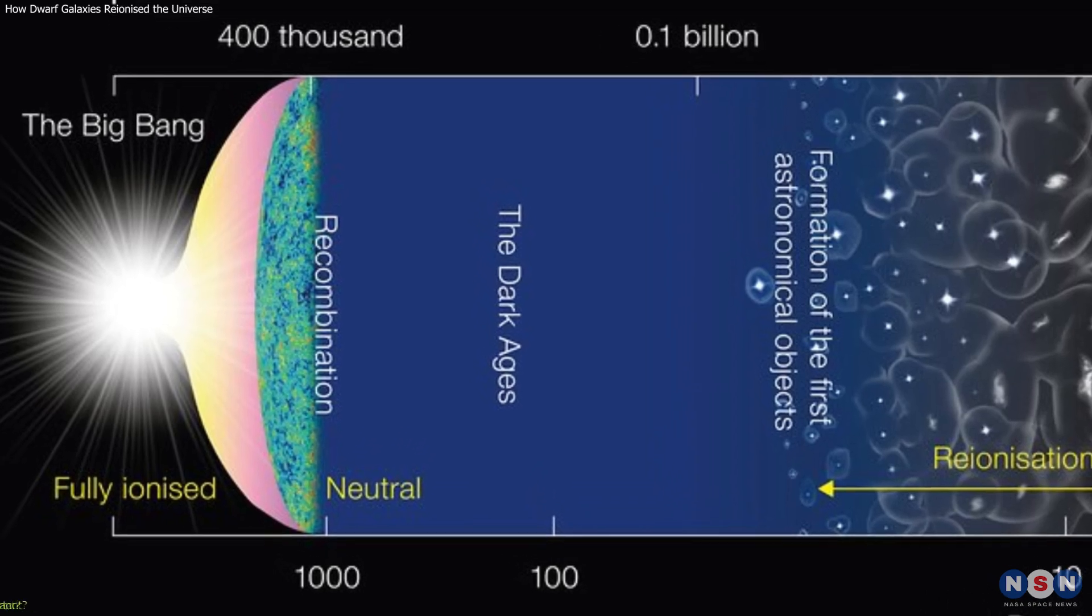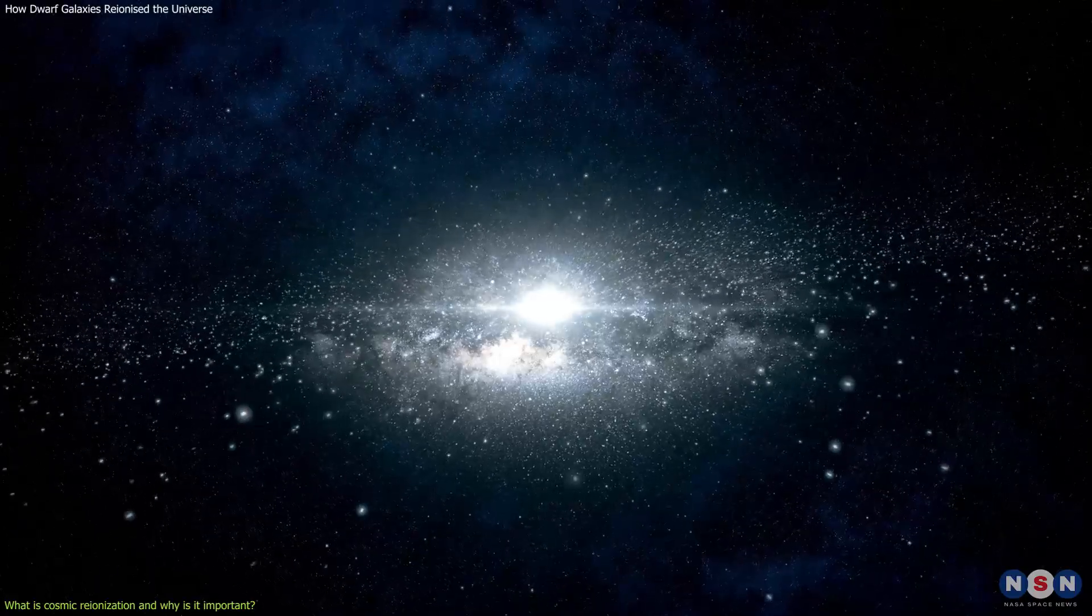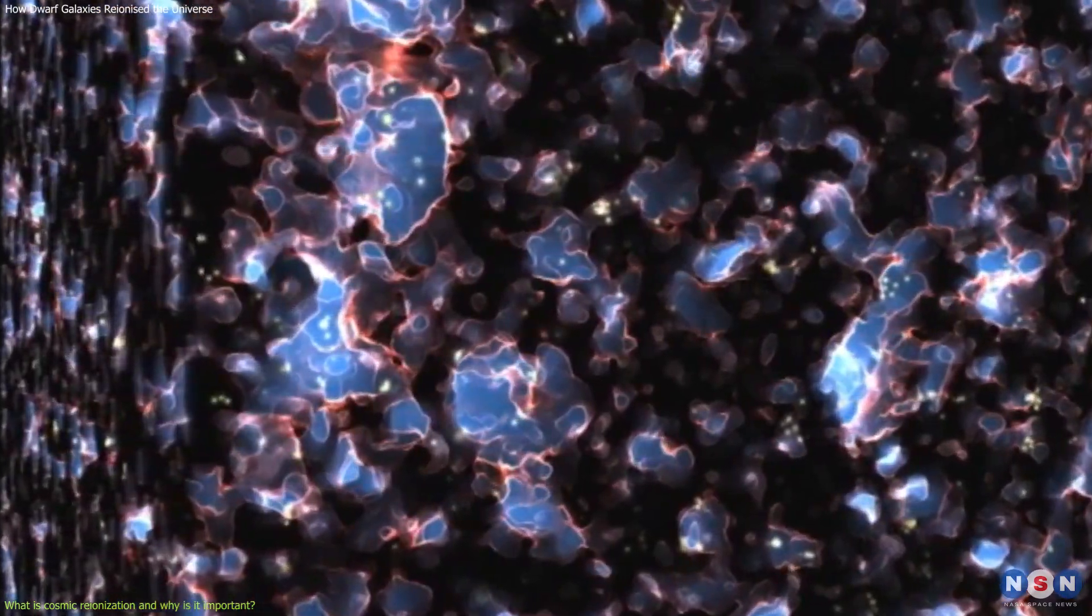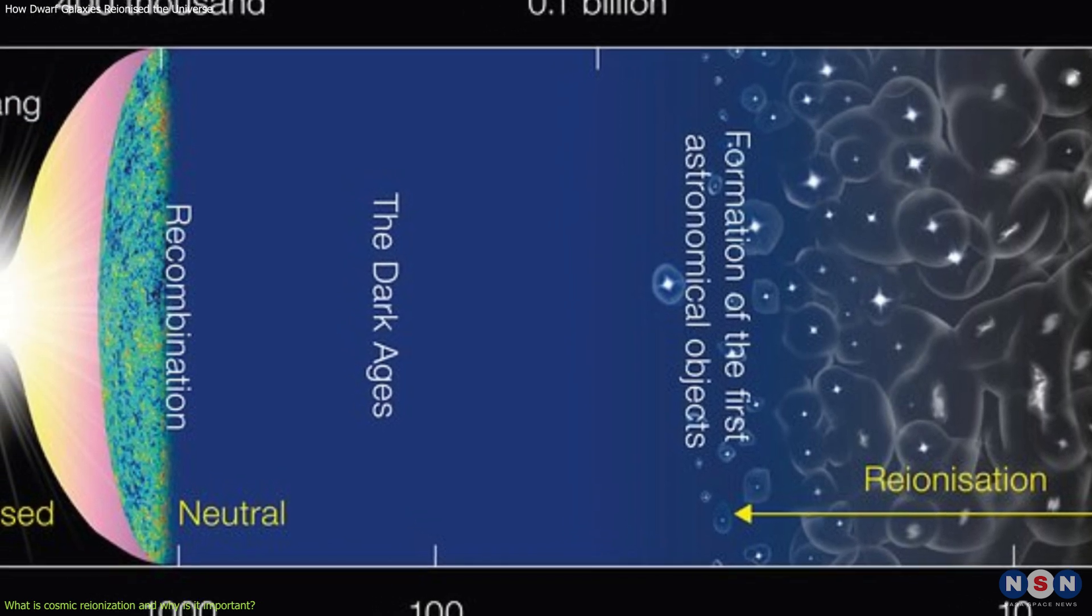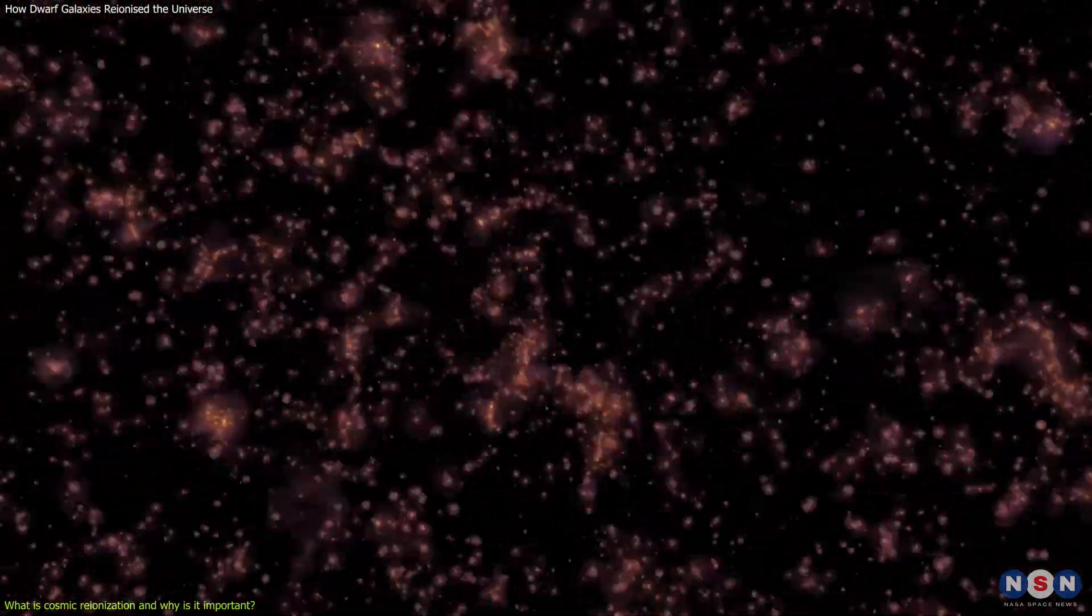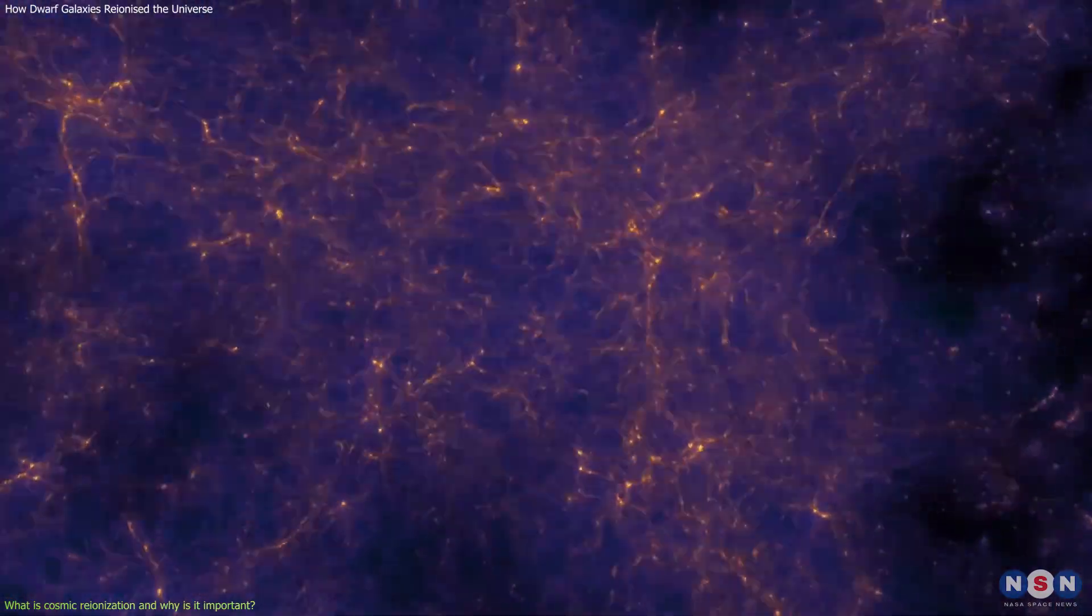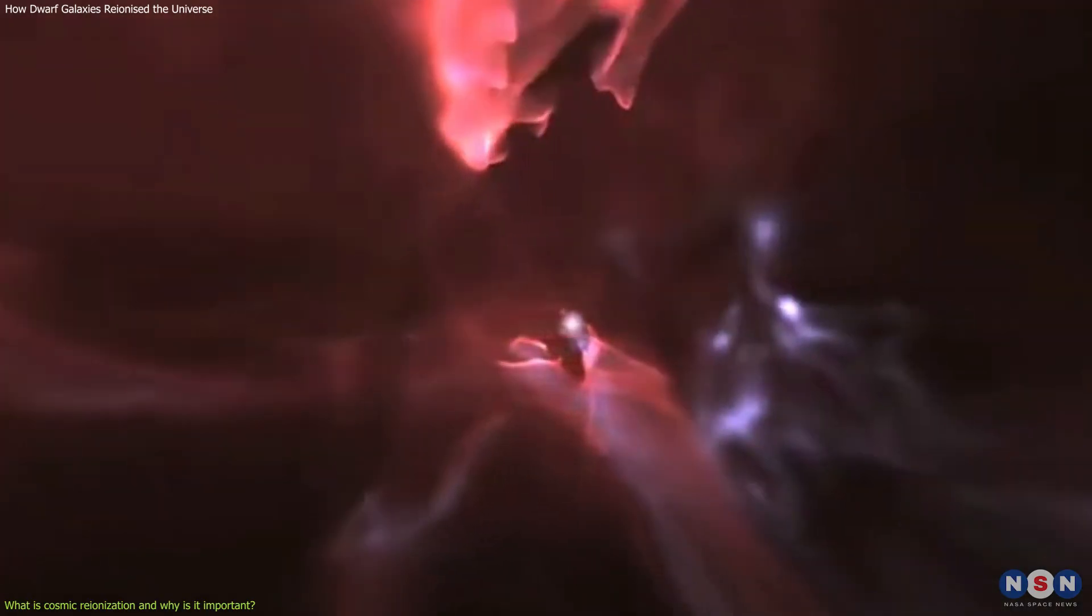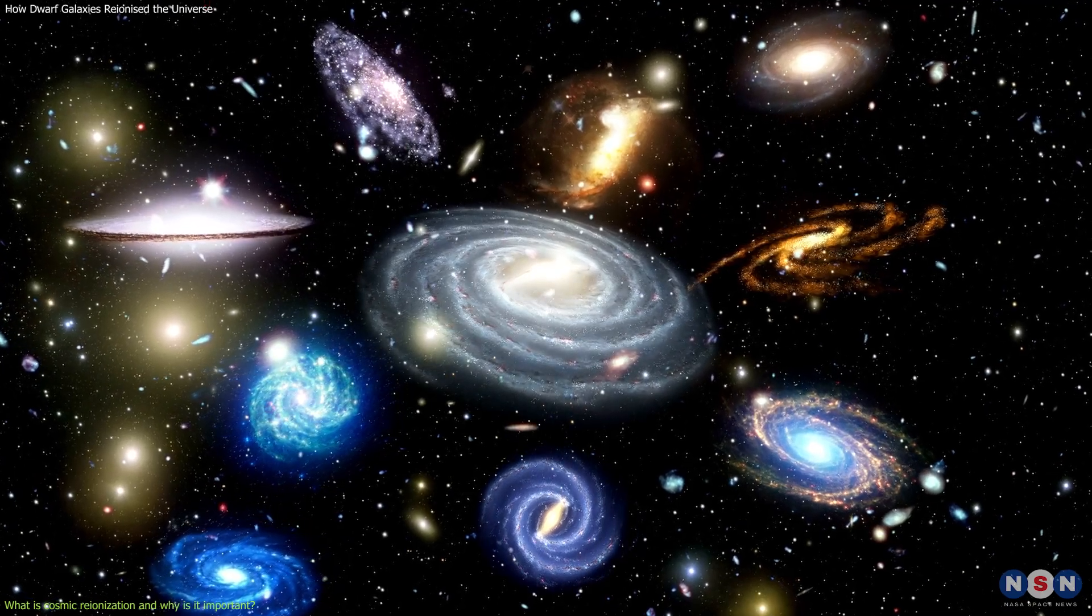Cosmic reionization is the process by which the neutral hydrogen gas that filled the universe after the Big Bang was transformed into ionized plasma by the intense radiation from the first stars and galaxies. This happened about 13 billion years ago, when the universe was only a few hundred million years old. Reionization is like a cosmic dawn, when the universe became transparent and visible for the first time. It is one of the most mysterious and crucial phases of the universe's evolution as it shaped the formation and evolution of the first structures and influenced the properties of the galaxies we see today.